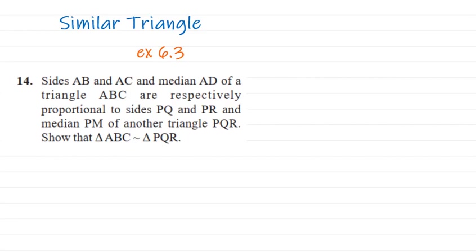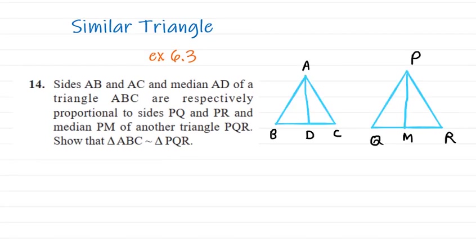This is question 14. If the sides AB, AC, and median AD of a triangle ABC are respectively proportional to the sides PQ, PR, and median PM of another triangle PQR, then show that triangle ABC is similar to triangle PQR. To solve this question, first let's draw the triangle. According to the question, the ratio of AB to PQ is the same as AC to PR and also as AD to PM.